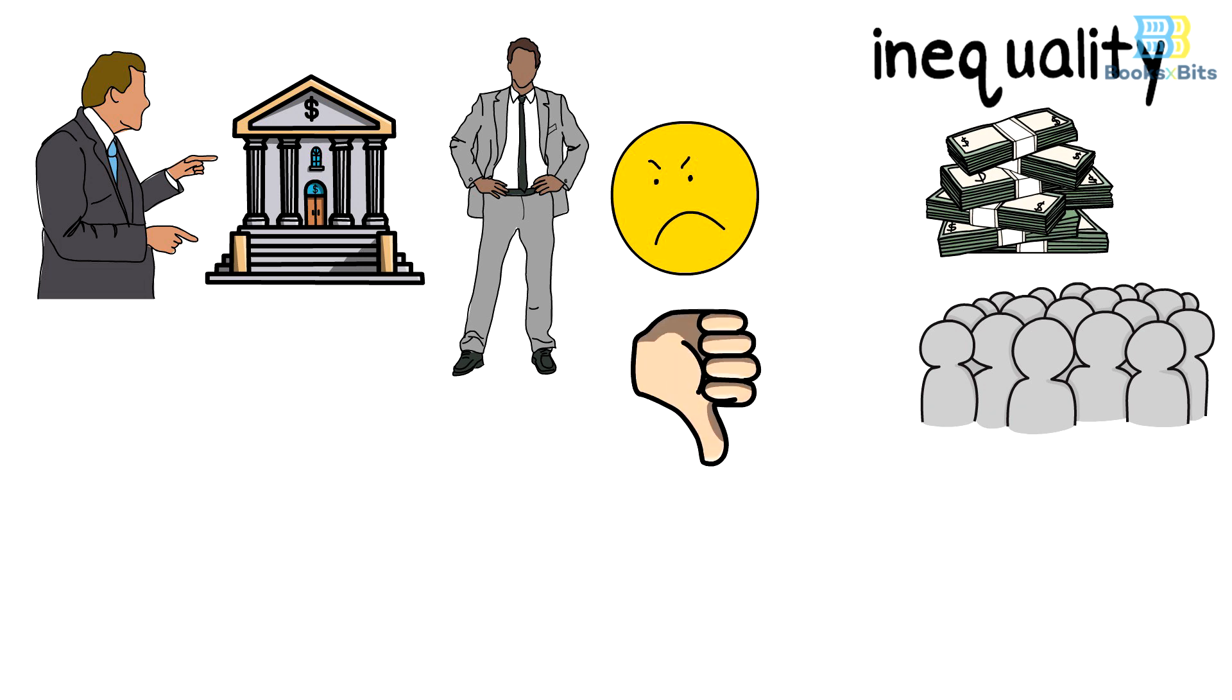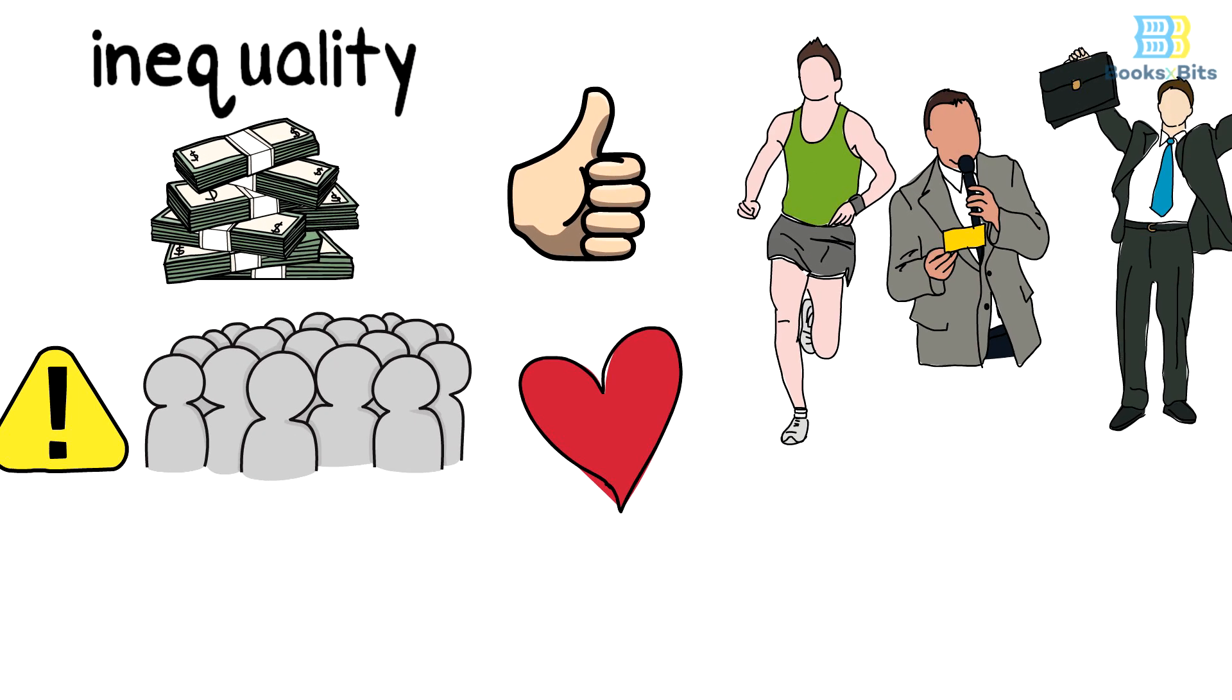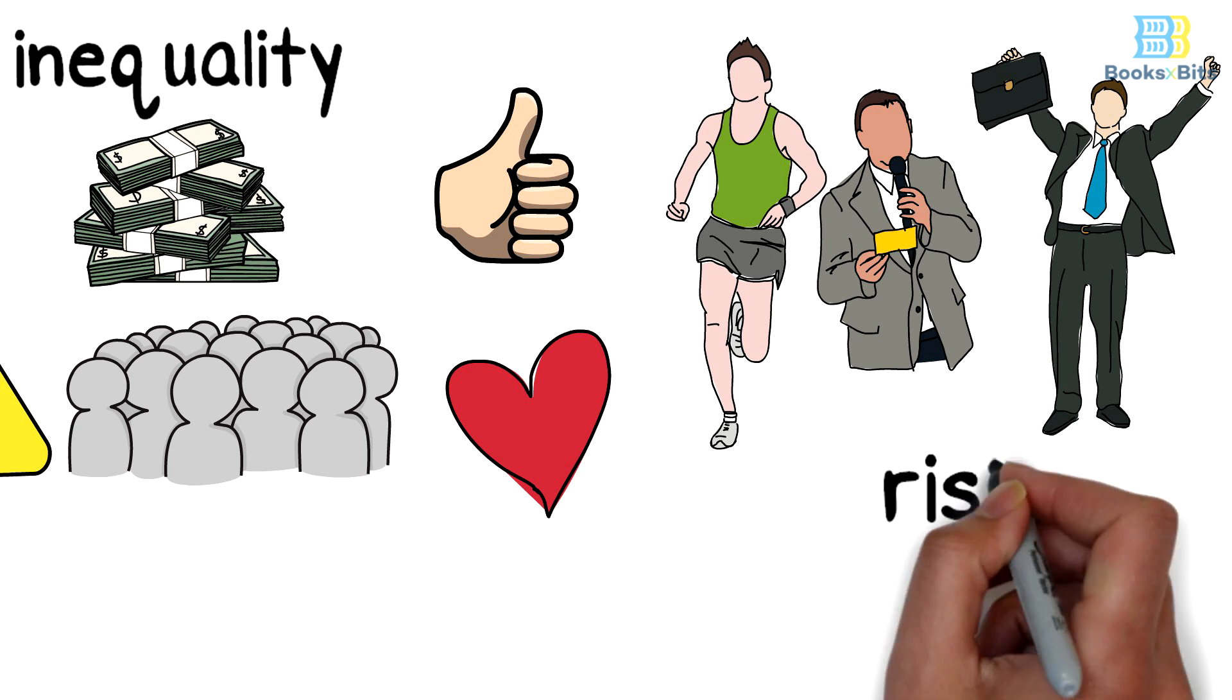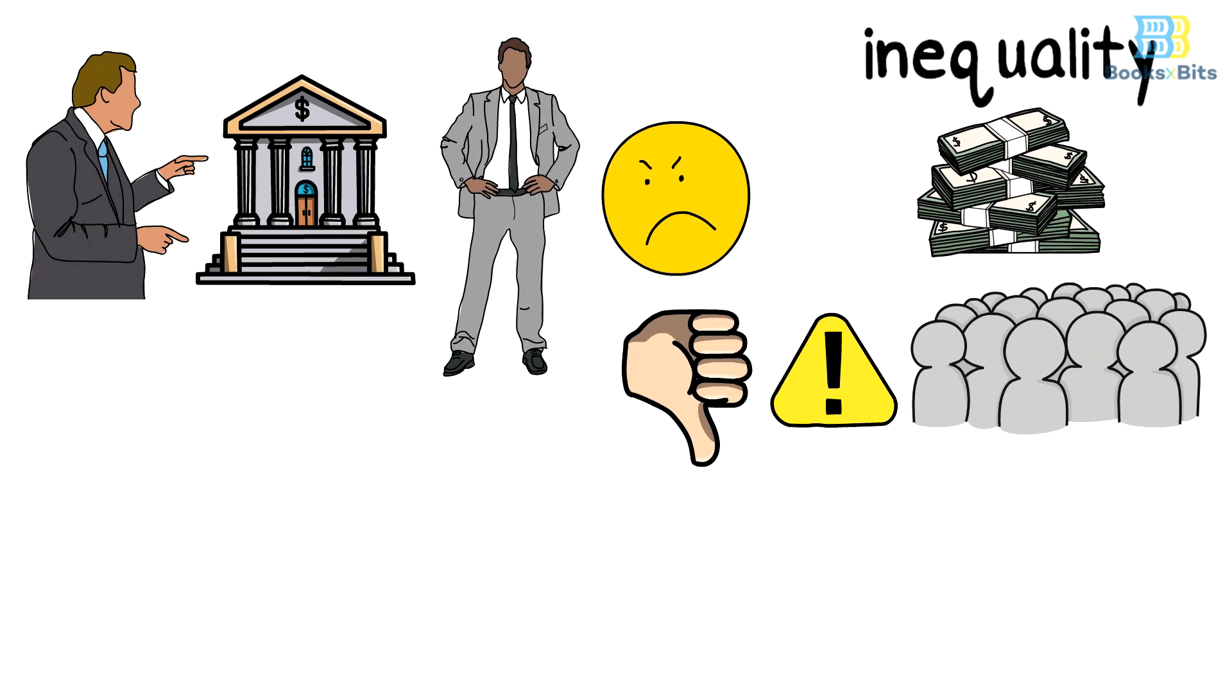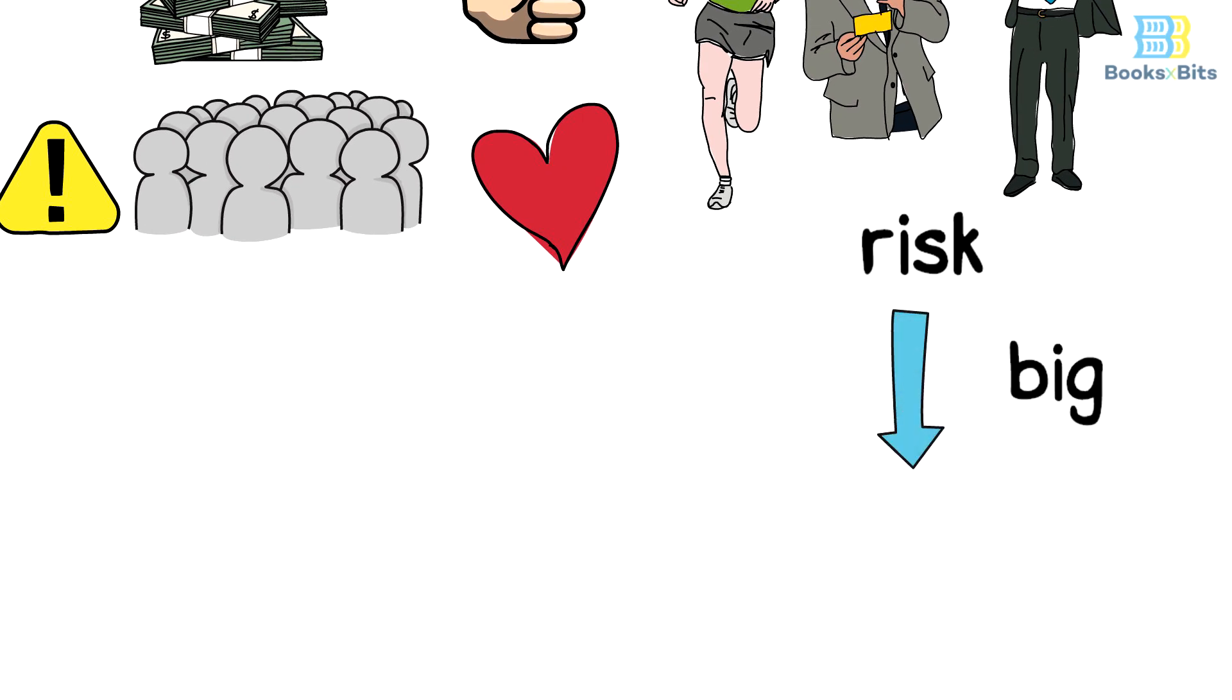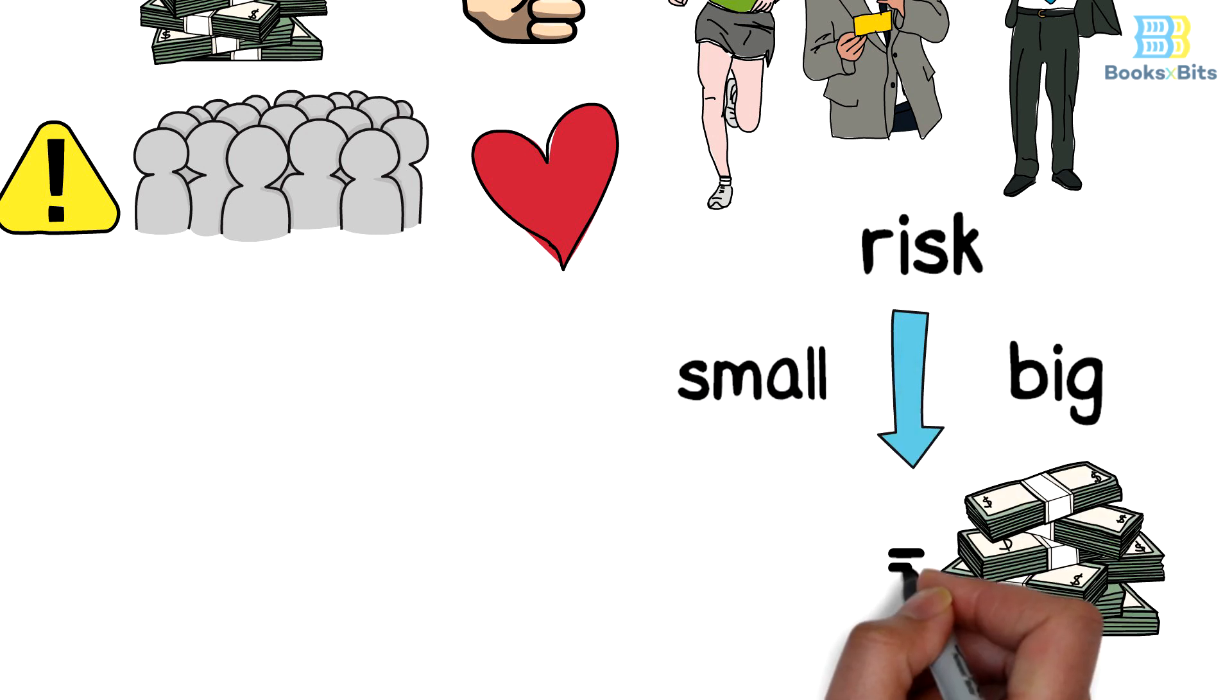This difference in society's perception is due to the risk factor. Society assumes that entrepreneurs and celebrities have taken a big risk to achieve their fortunes, while it's believed that CEOs and bankers collect their wealth from safe and secure salaries. In other words, society accepts that a big risk leads to big rewards, but it hates if a small risk leads to the same outcome.